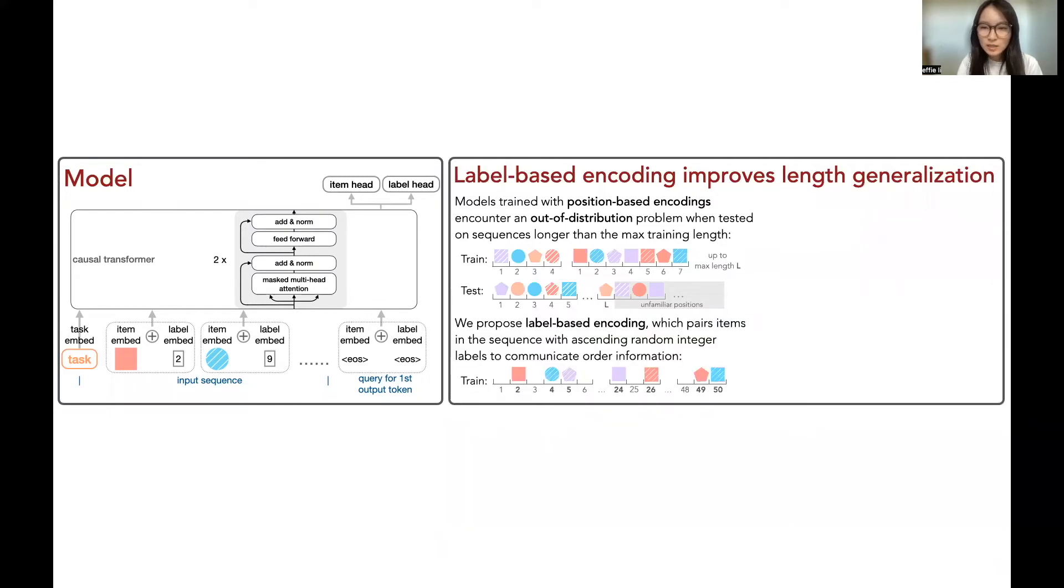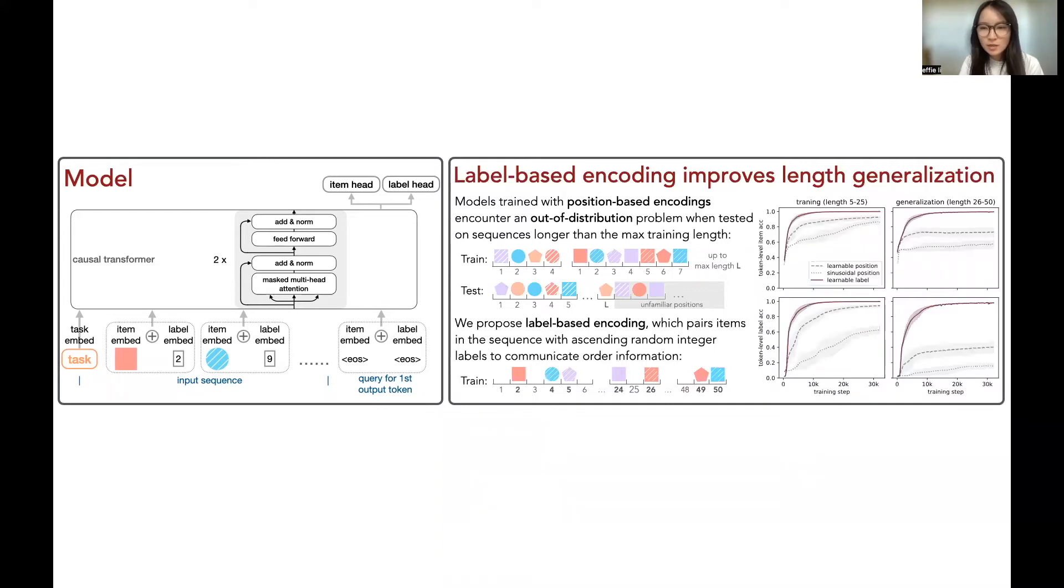Label-based encoding instead encodes sequence order with a set of ascending random integer labels. We sample labels from a range much larger than the max training length L, so that longer sequences can be encoded with familiar labels. In our setting, label-based encoding indeed led to much better learning and generalization compared to position-based encoding baselines.